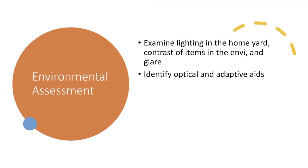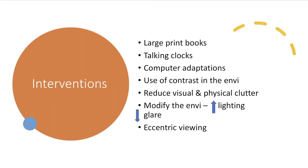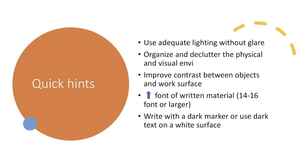Other interventions for clients with low vision include large print books, talking clocks, computer adaptation, use of contrast in the environment, bold line paper, bold tipped pens, reducing visual and physical clutter, modifying the environment, increasing lighting, and decreasing glare. Eccentric viewing maximizes the use of remaining vision — for central vision loss, the client rotates their head or turns their trunk to use peripheral vision using the technique called eccentric viewing.